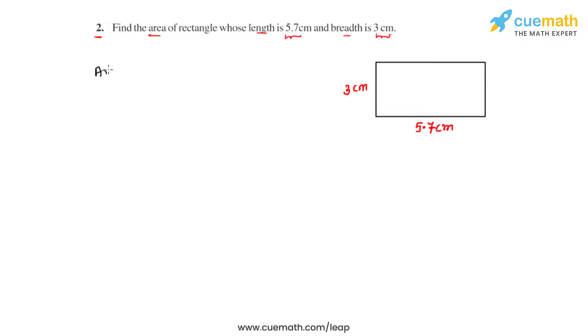The area of a rectangle is found by the formula L times B, where L is the length and B is the breadth of the rectangle.